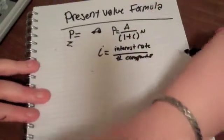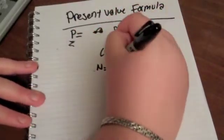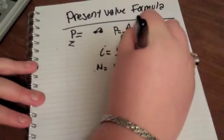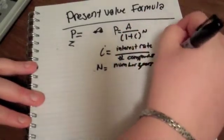If you really don't know what number of compounds are, I'll tell you that in a second because I'm just going to put the N down. N is the number of years times the number of compounds.